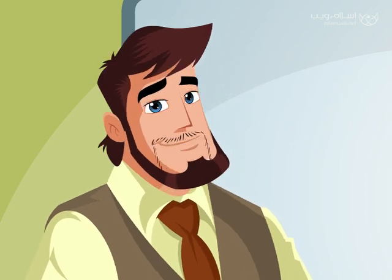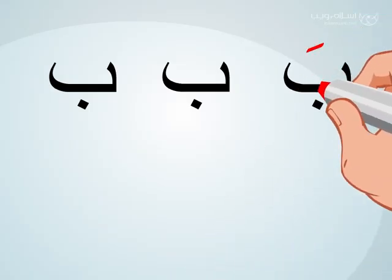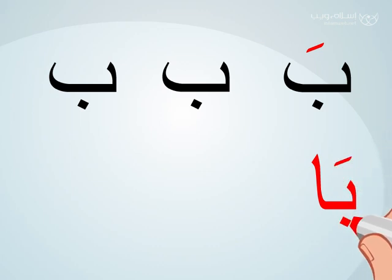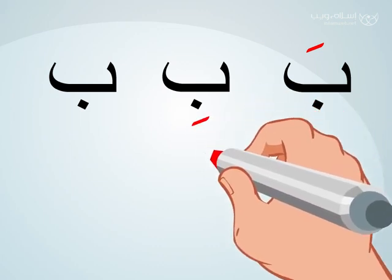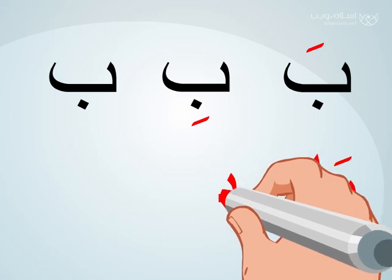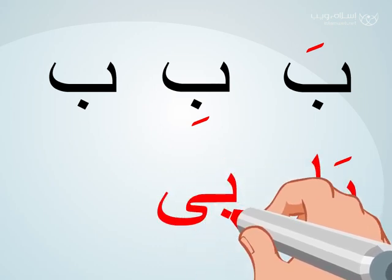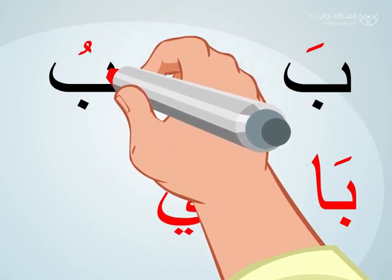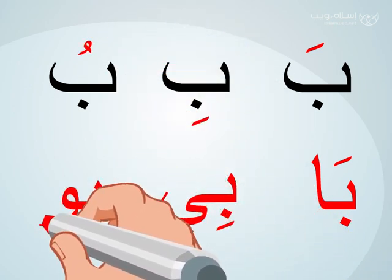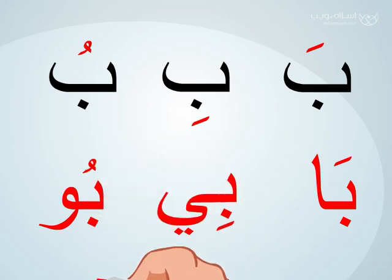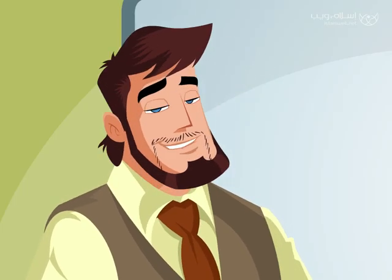Let's check the Ba letter. We write the Ba with Fatah and pronounce 'ba', then we add Mad Alif and pronounce 'baa'. We write the Ba with Kasra and pronounce 'bi', then we add the Mad Ya and pronounce 'bii'. We write the Ba with Dham and pronounce 'bu', then we add Mad Waw and pronounce 'buu'.